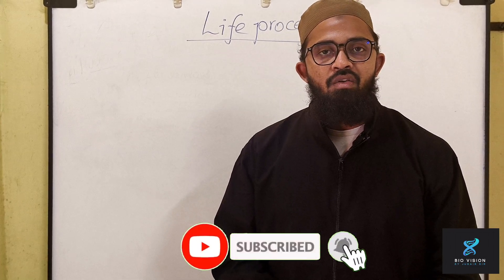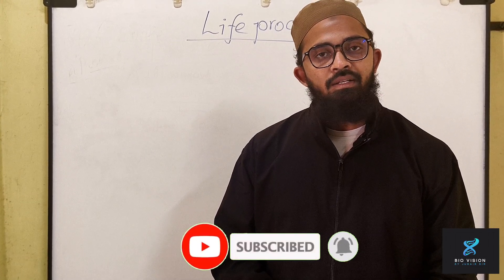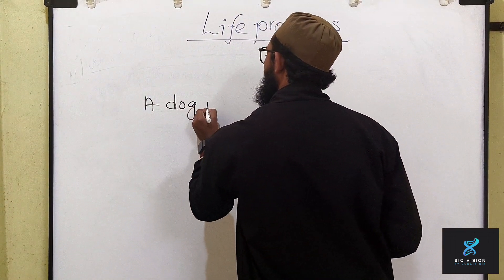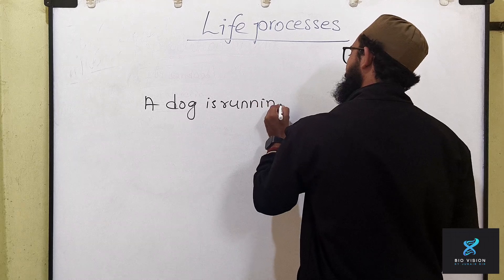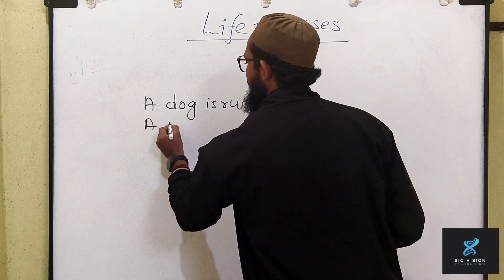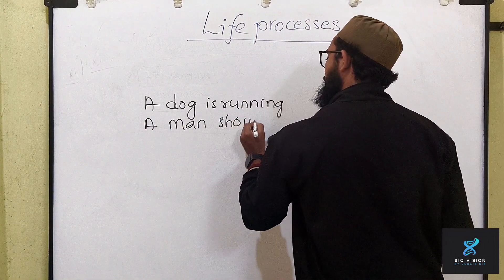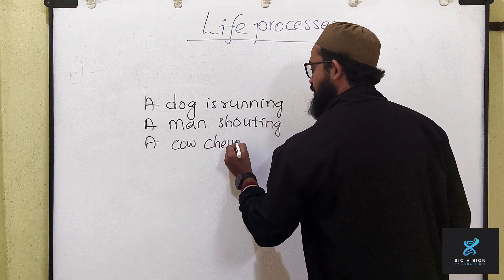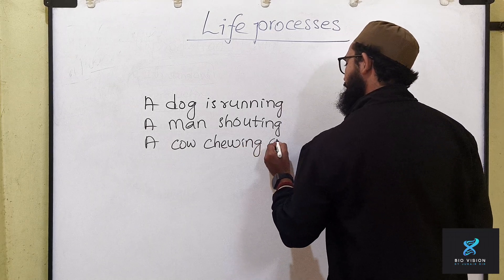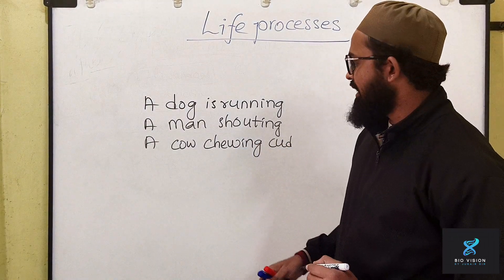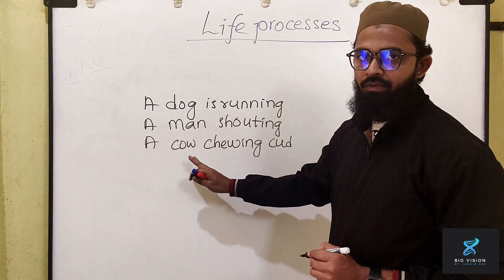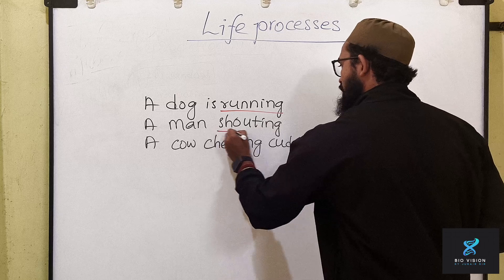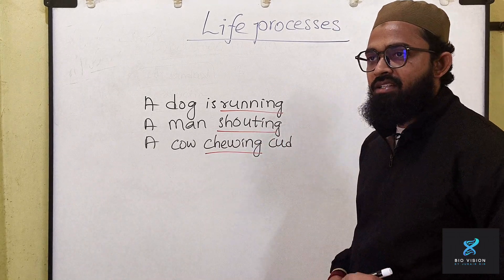So my dear students, how can we say whether something is alive or not alive? Look here — a dog is running, a man shouting, a cow chewing curd. How can we say that this dog, man, and cow are alive? Running, shouting, chewing — these are the characteristics of having life.